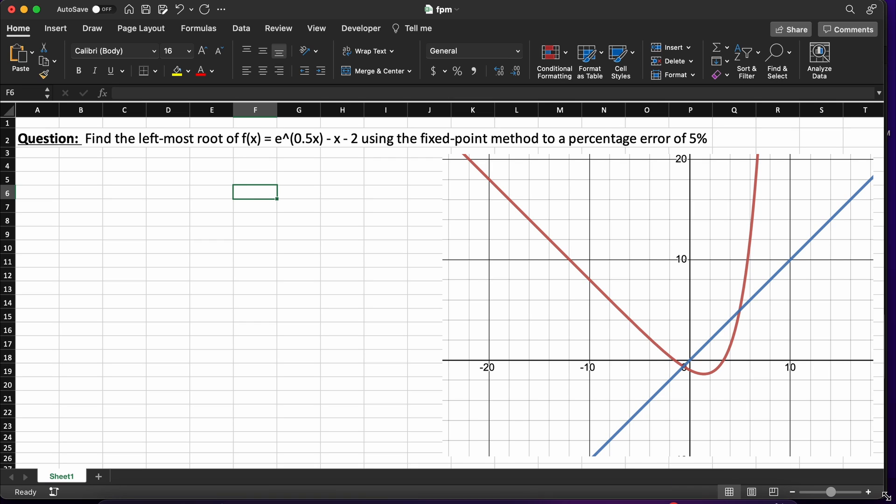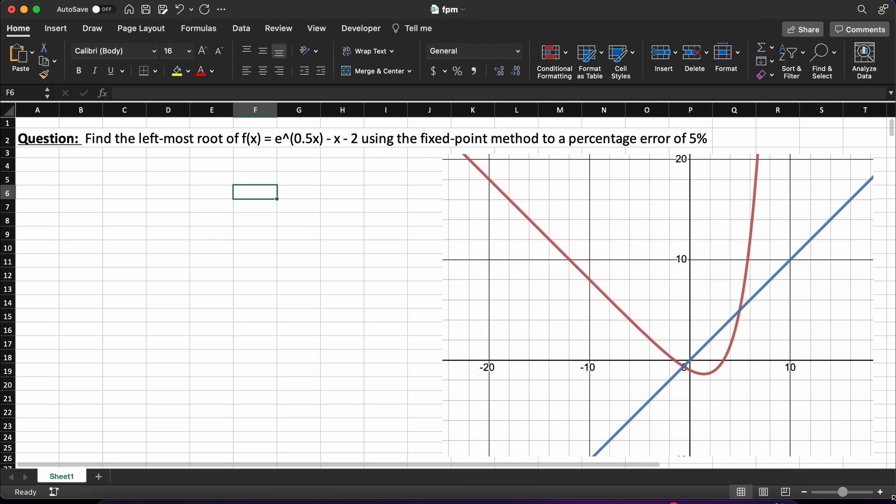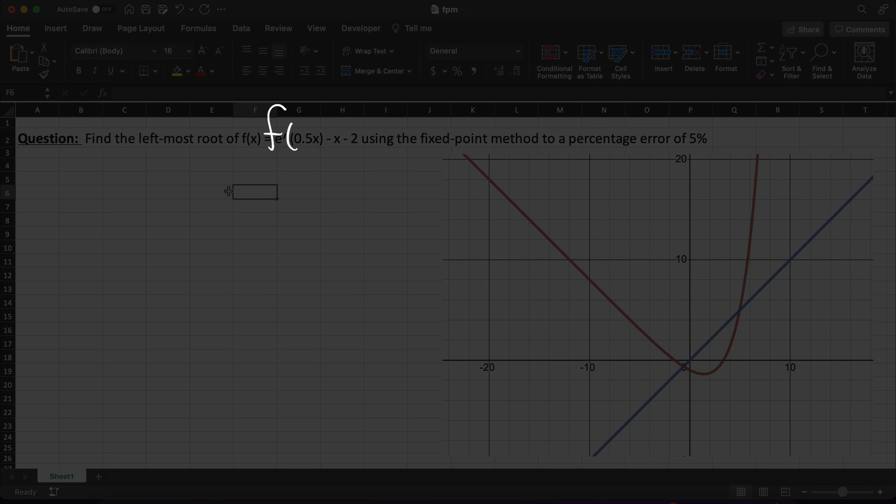To walk through how to do this I will be completing the following example. The problem states for us to find the leftmost root of the function Euler's number to the power of 0.5x minus x minus 2, using the fixed point iteration method to a percent error of 5%. To begin we first need to find our g functions for f of x.